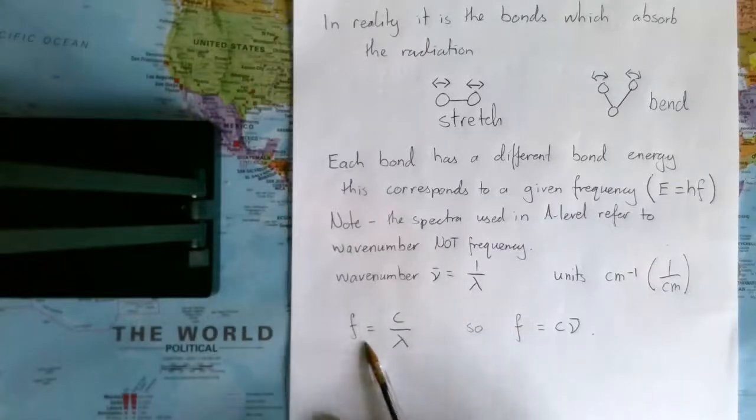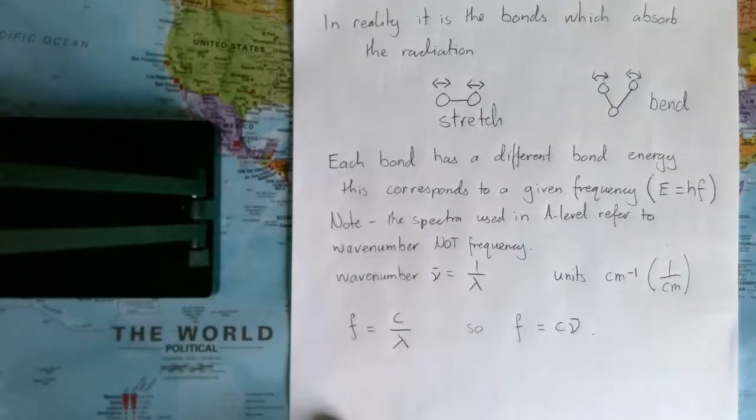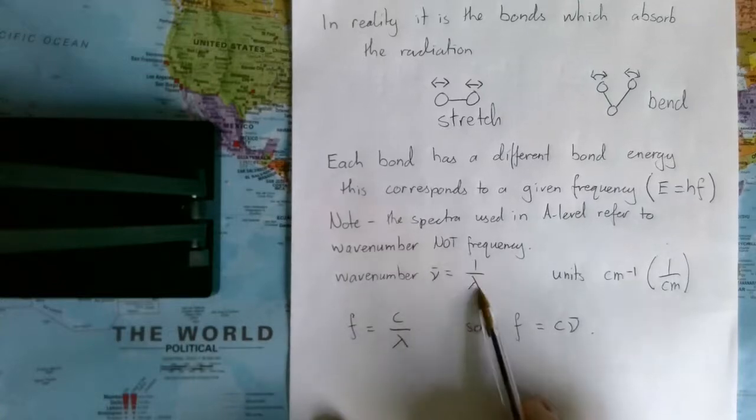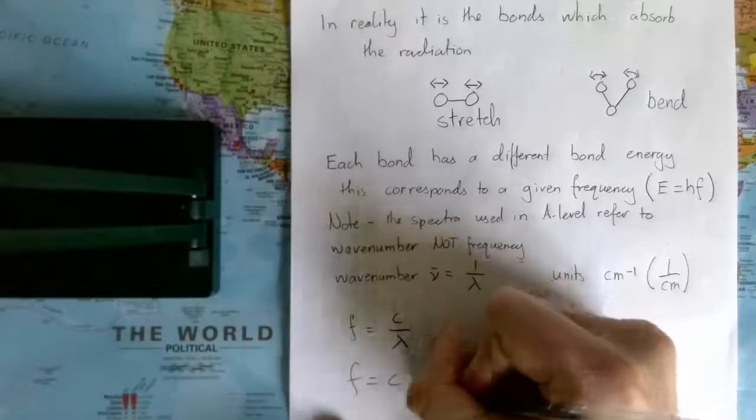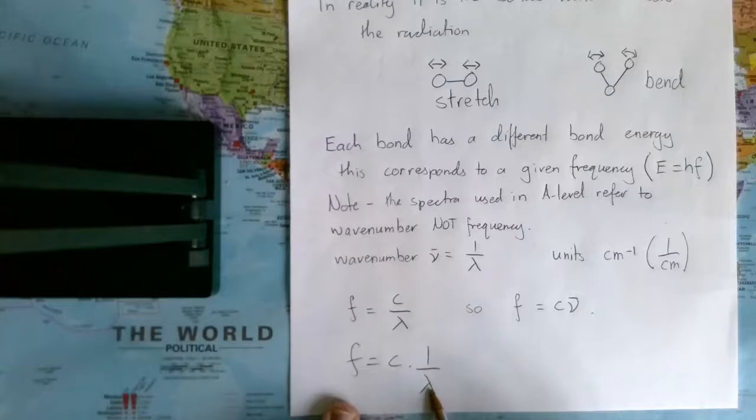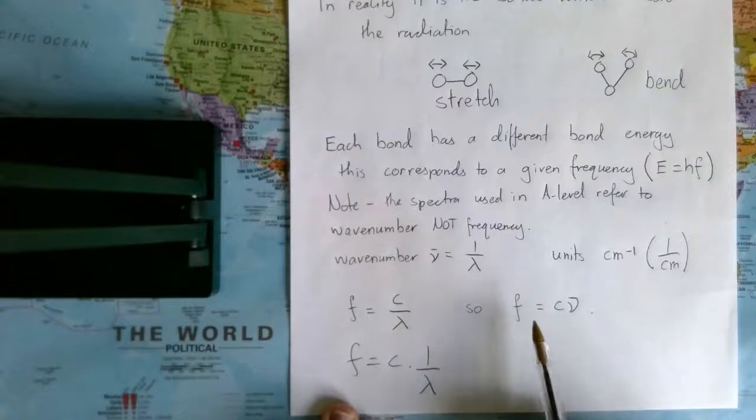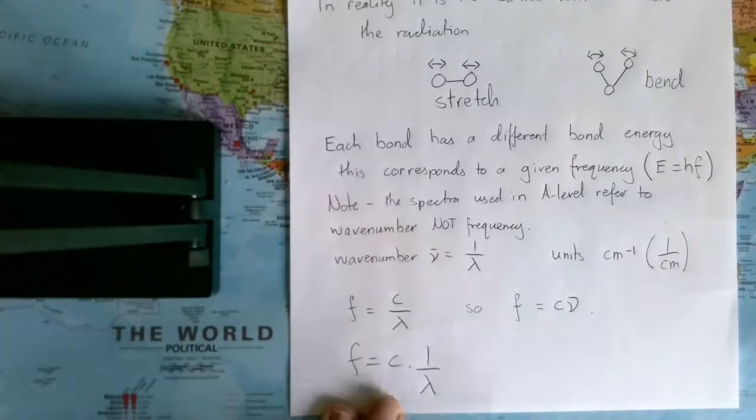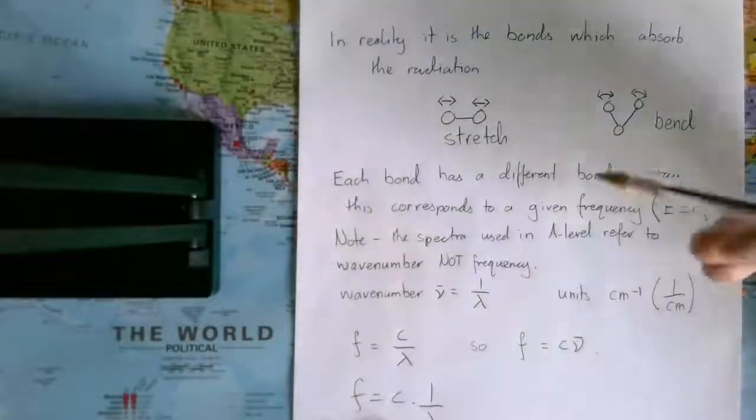Hopefully you know from GCSE that frequency is the speed of light divided by wavelength. If wavenumber is one over wavelength, then frequency is speed of light times one over the wavelength, so we can simply replace it. This is a constant, so it's just a way of saying that frequency is proportional to wavenumber. You can relate wavenumber directly to frequency and therefore to energy.